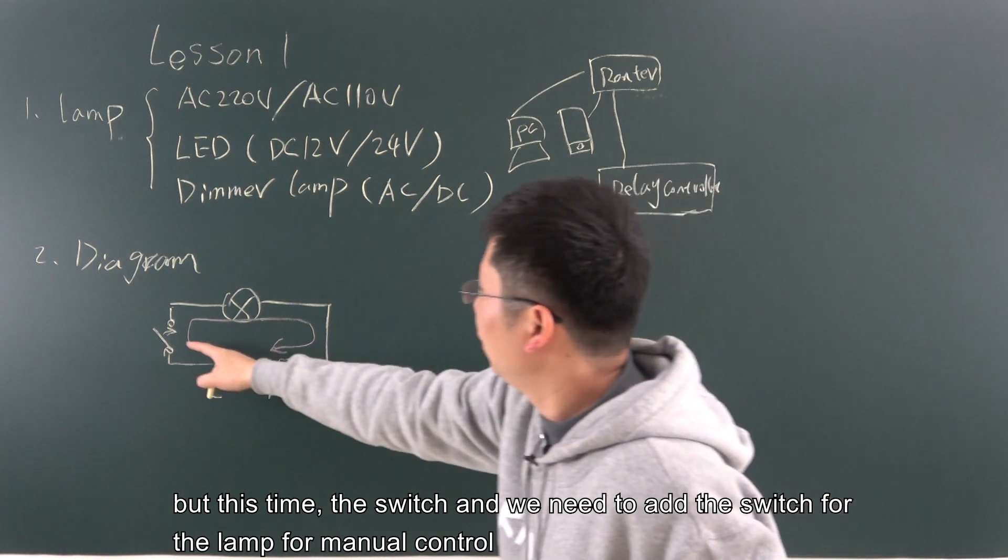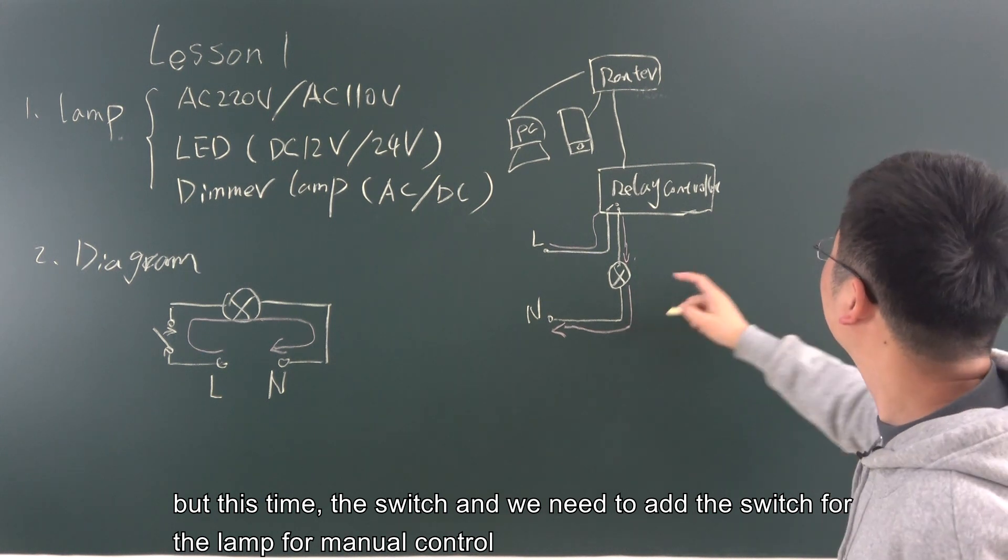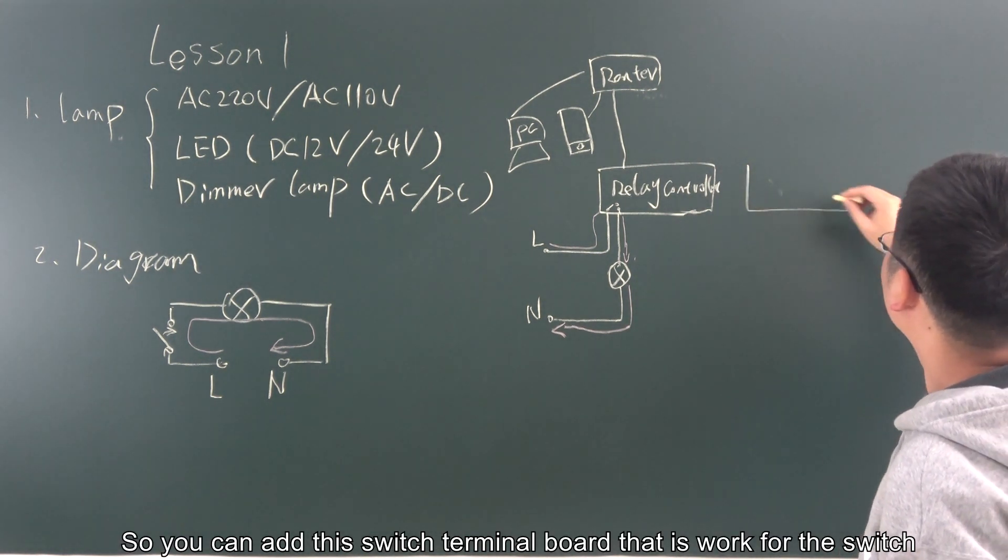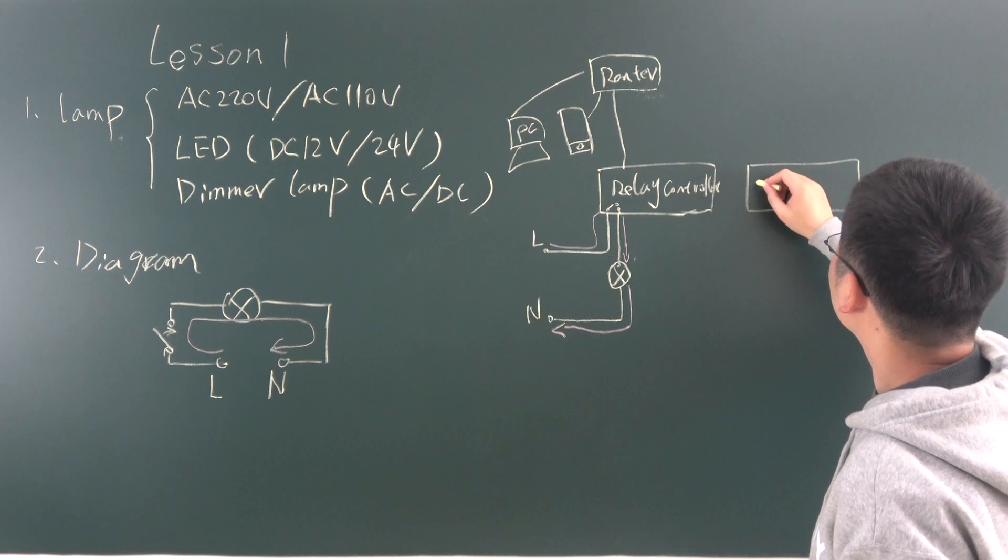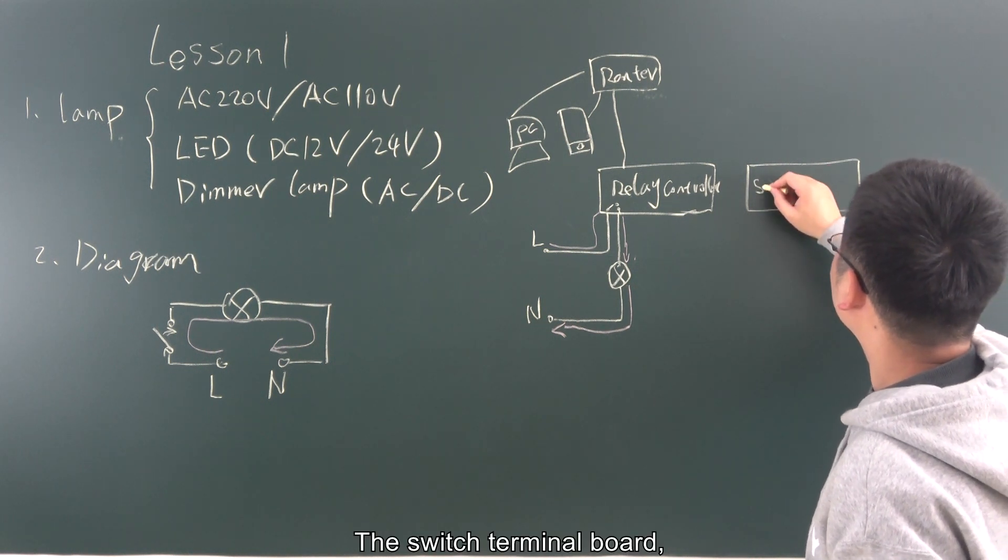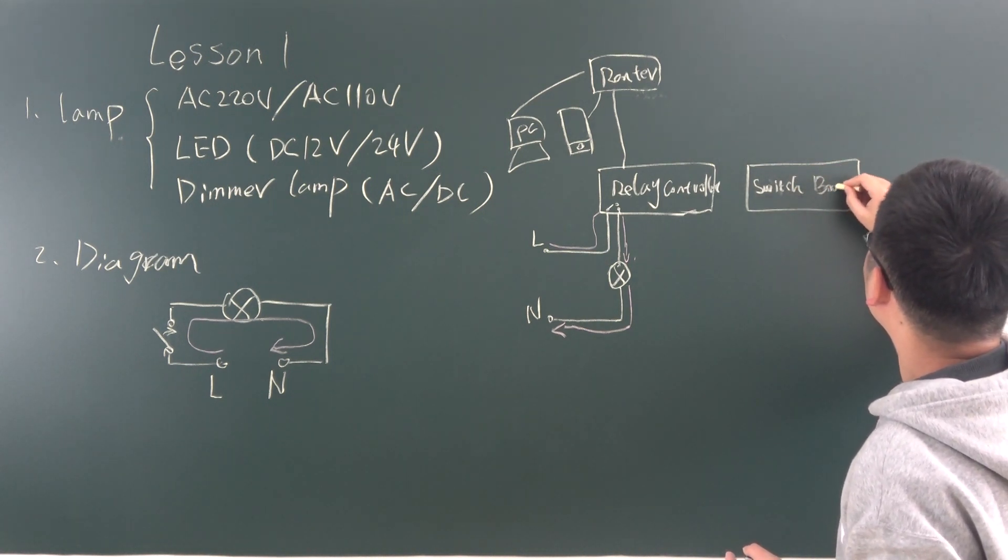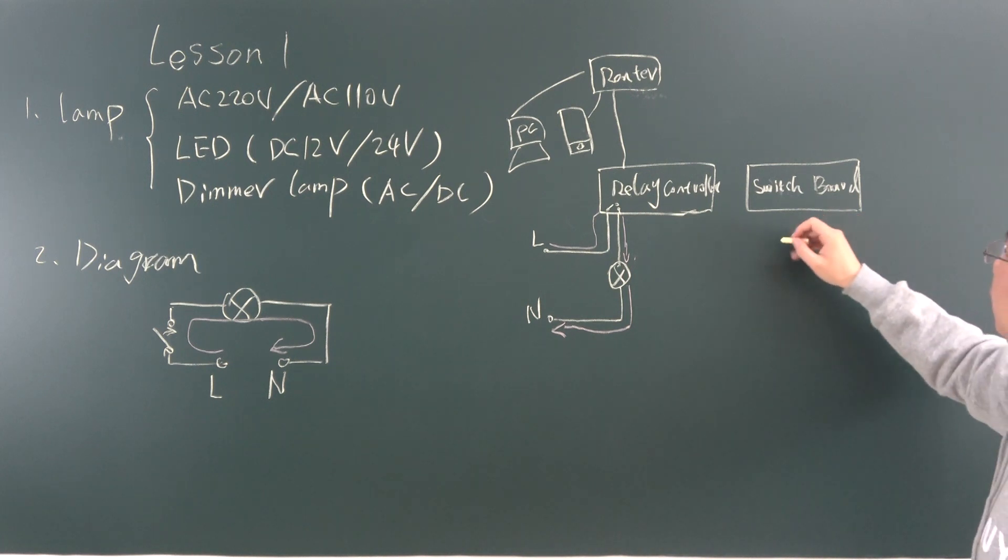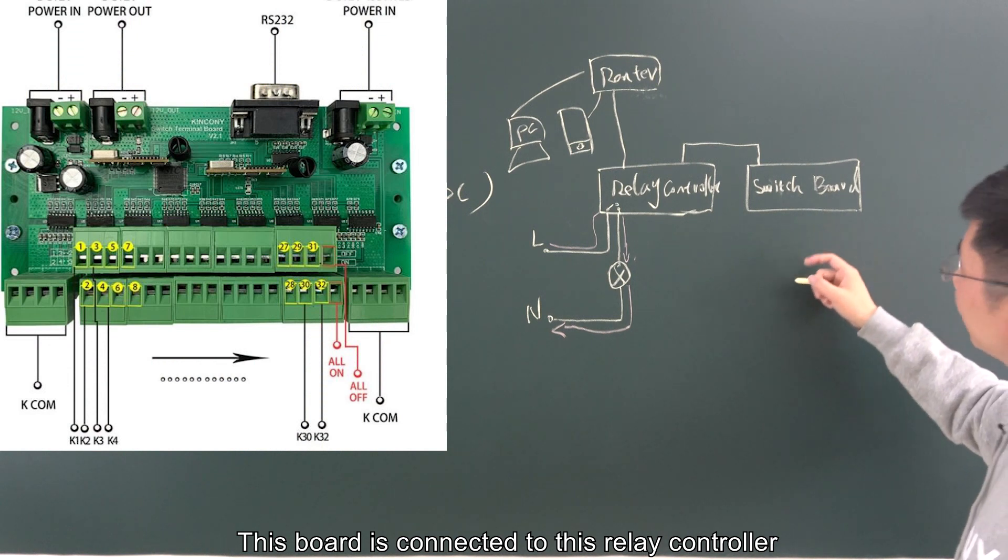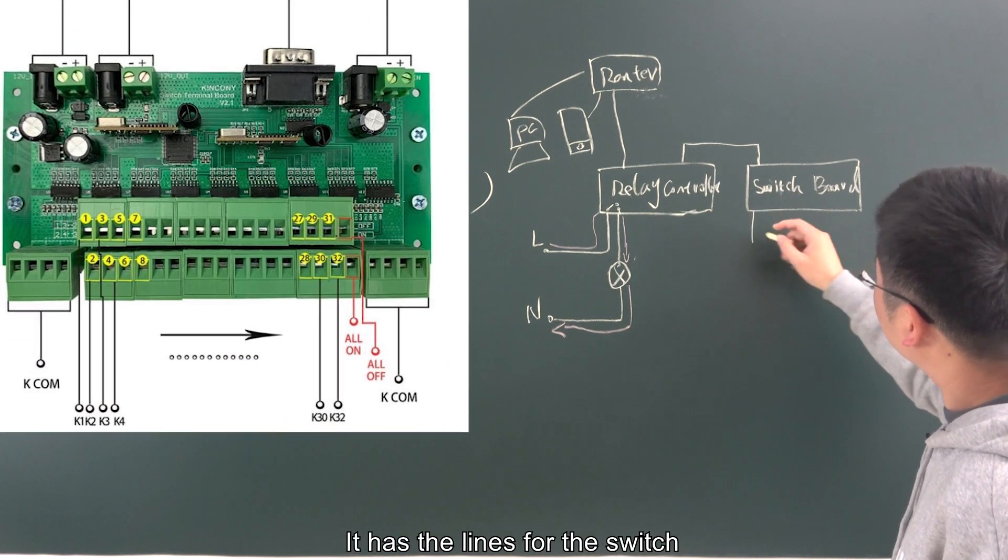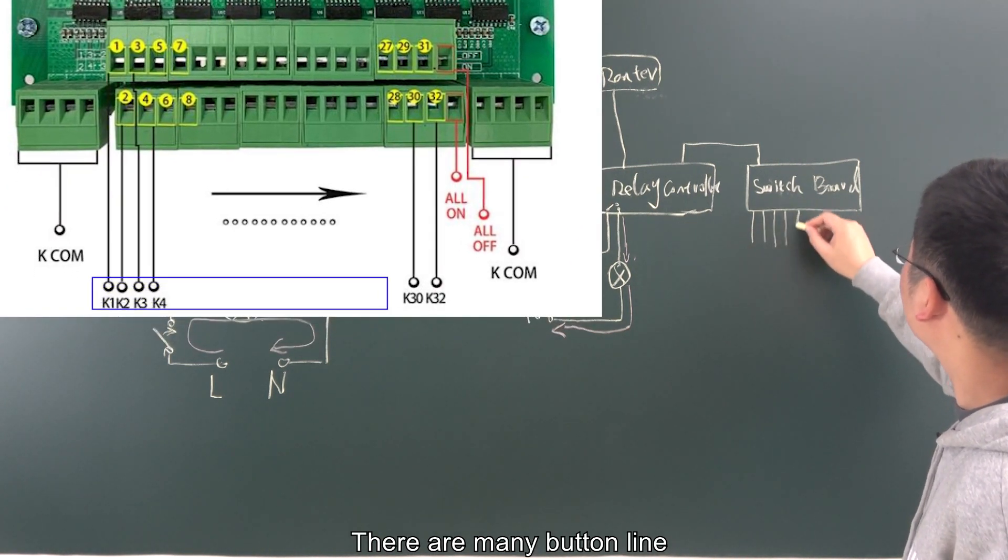But this time, we need to add the switch for the lamp for manual control. So you can add this, a switch terminal board. That is the work for the switch. So this part is connected to this relay controller. And it has a line for the switch.